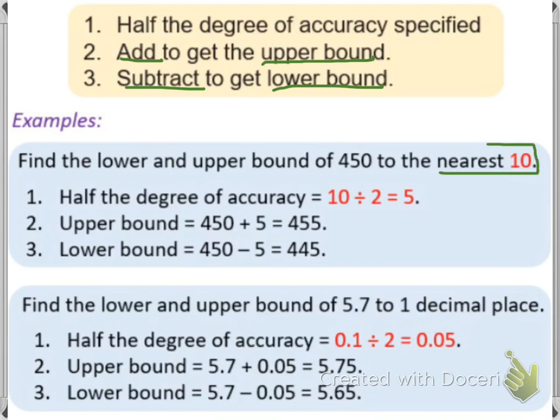The main thing you need to remember here is the value they give in nearest. So here it's nearest 10. What we need to do is take 10 and divide it by 2, and we get 5. And that 5 is what we need to add and subtract 450 with.